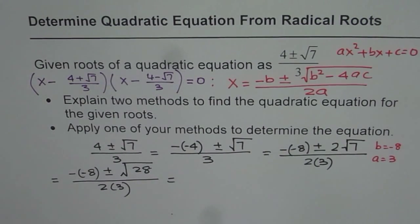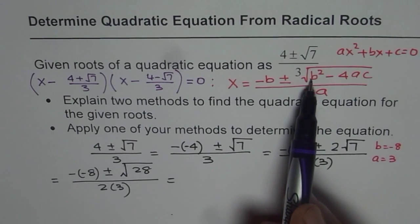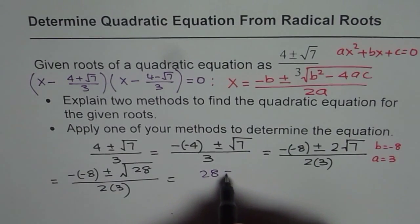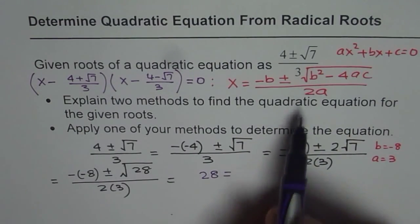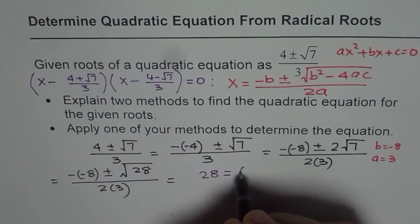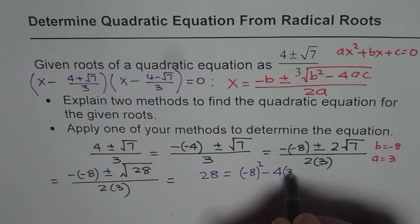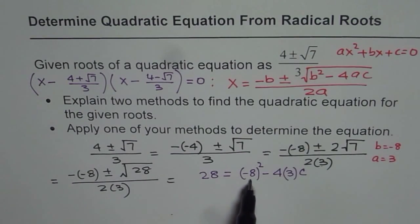Inside I have square root of 28. I know that 28 should be b squared minus 4ac. So what I will do here is, I know what is b and I know what is a. So I say 28 should equal b squared. b is minus 8, so I will write this as minus 8 squared minus 4 times a is 3, times c. So 28 equals b squared minus 4ac. Now from here I can find what c is. Do you see the beauty?